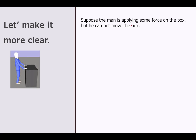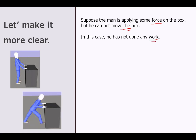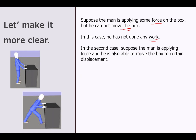Let's make it more clear. Suppose a man is applying some force on a box but he is not able to move the box. According to our definition, there is force but there is no displacement — so is it work? In this case, he has not done any work. In another case, suppose this man is applying force and he is also able to move the box by some certain displacement. Here we can see that there is force and displacement also. So yes, in this case, he has done work — it is work done.